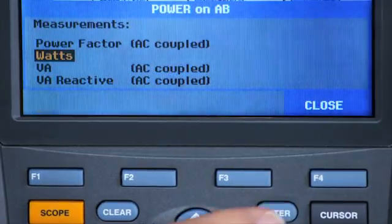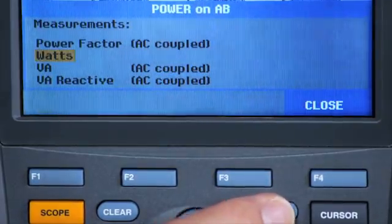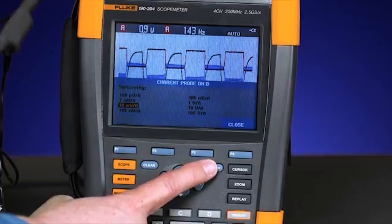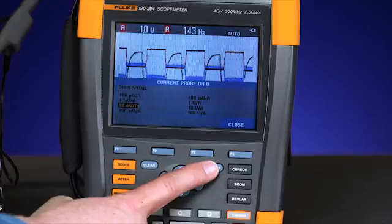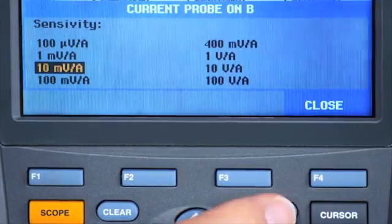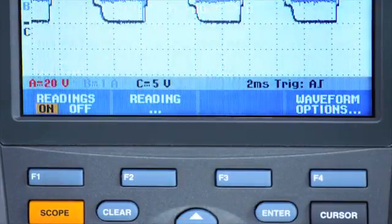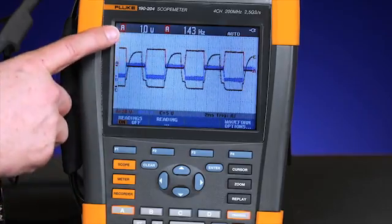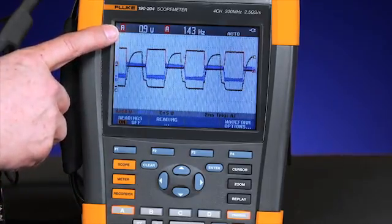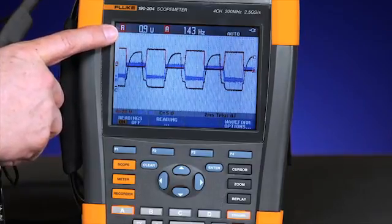Select watts mode to get the unit of measure you need. Scale the sensitivity on the input probe to 10 millivolts per amp, or whatever your current probe requires. Once you've stepped through those key presses, you can see measurement A is measuring the power in watts across the fast switch.